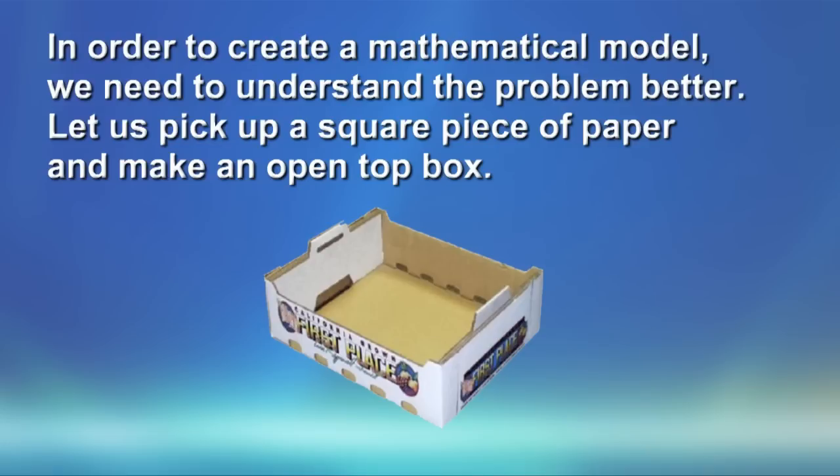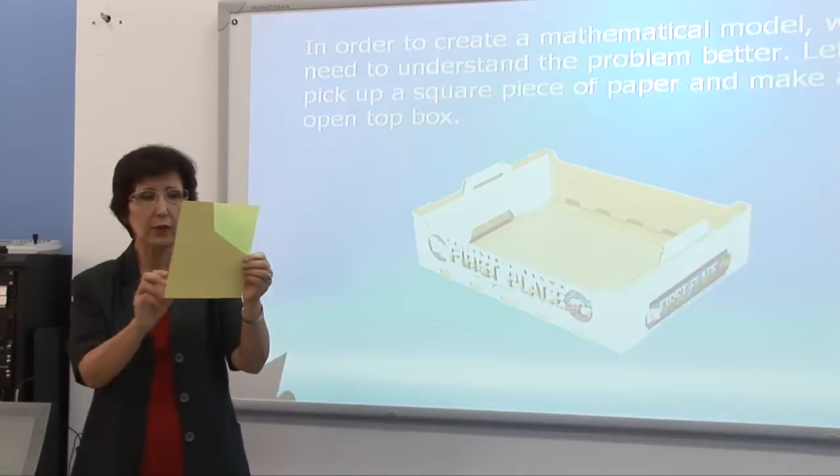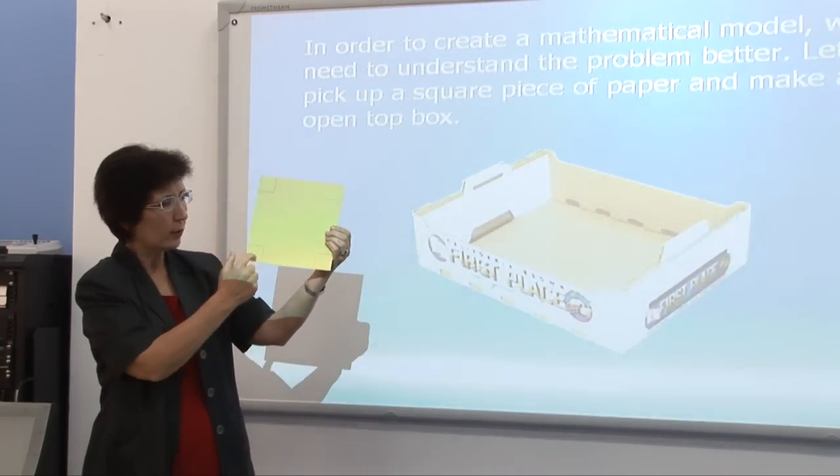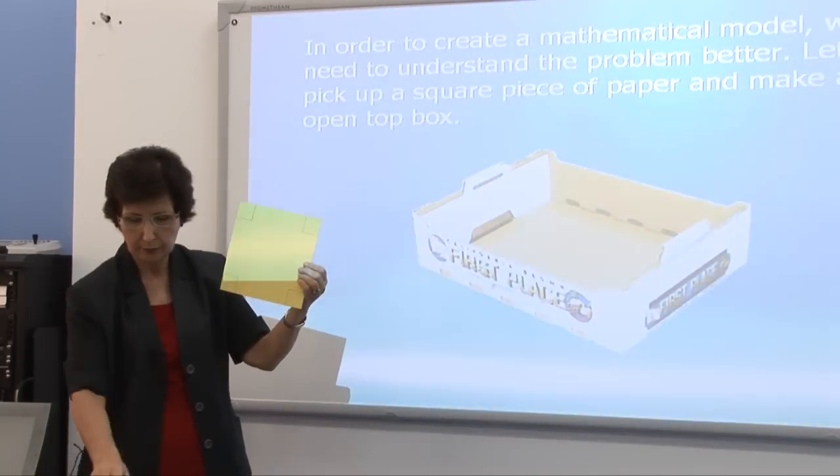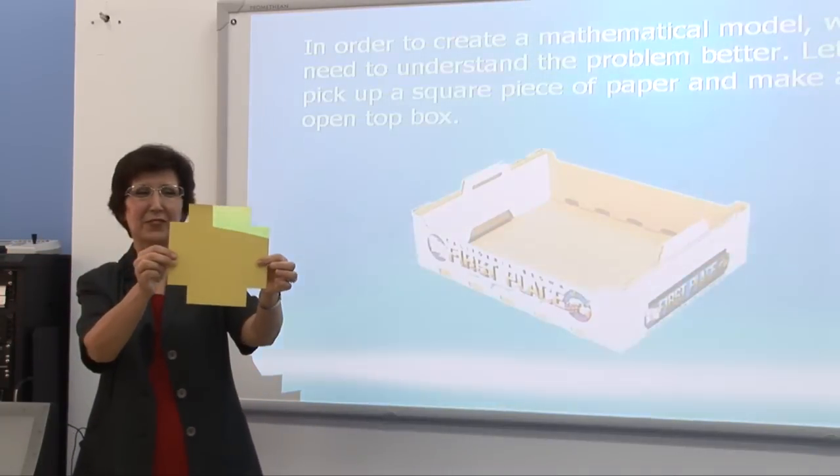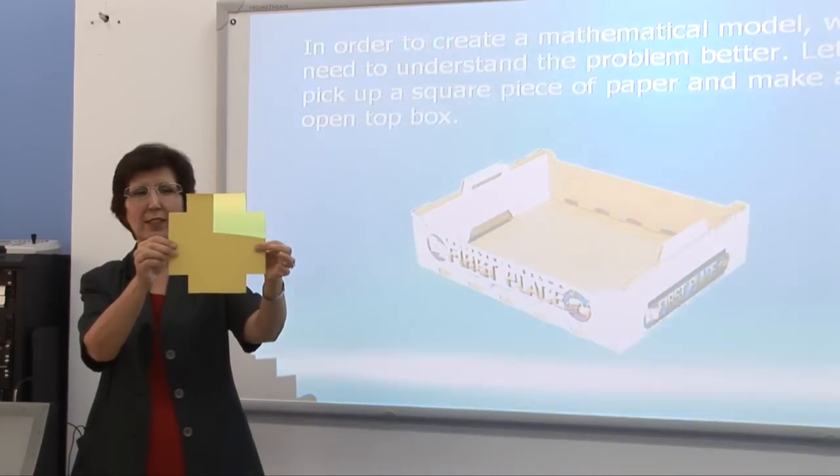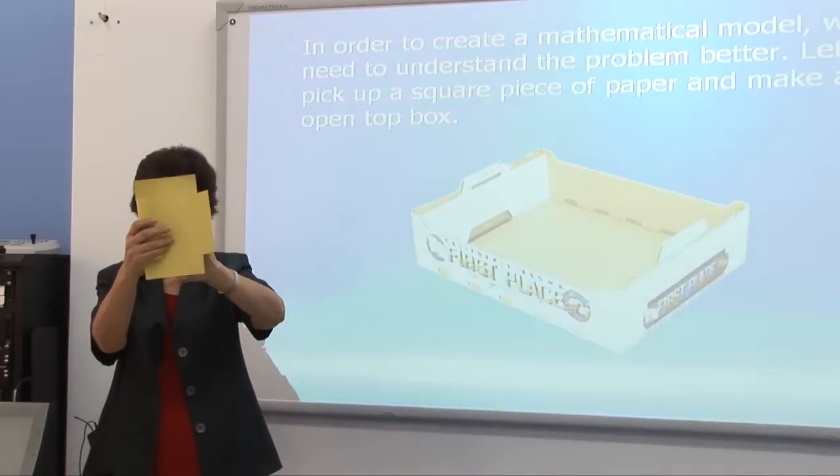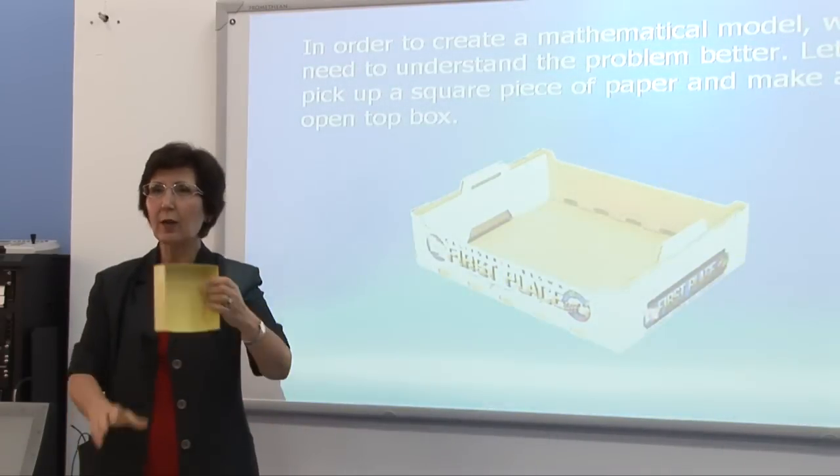Now, how do we make a mathematical model out of this? I have a cardboard piece of paper, and I want to make a box out of this. The first thing I do, I make four corners, four squares in each corner. Then, I cut them off, which gives you something like this. Then, obviously, you fold these like this, and by doing that, you will end up with a box.